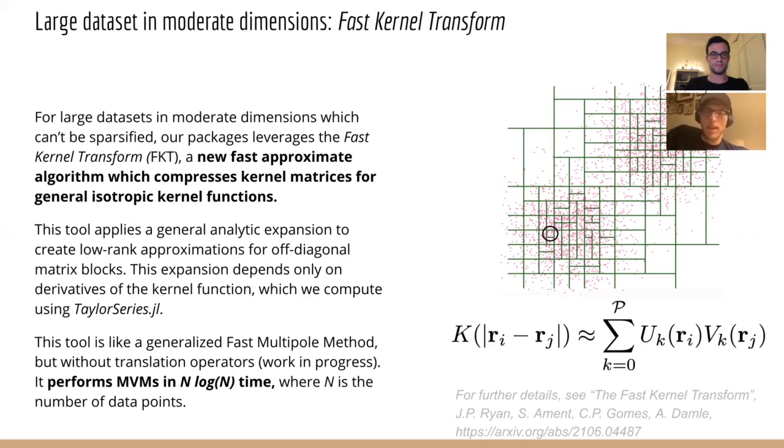With controllable accuracy and without the need for any algebraic matrix factorization, such as a QR factorization or an interpolative decomposition. Further, the FKT is based on a new analytic expansion, which works for general isotropic kernel functions, and it only depends on derivatives of the kernel, which we can compute using the TaylorSeries.jl package. With the fast kernel transform, matrix vector multiplication runs in n log n time, where n is the number of data points.